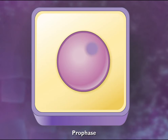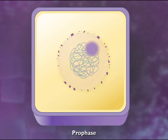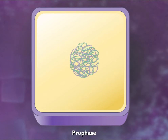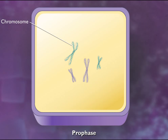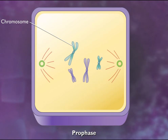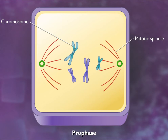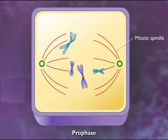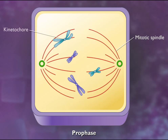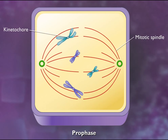Early in mitosis, during prophase, the nuclear membrane and nucleolus begin to break down. As prophase continues, the DNA condenses to form chromosomes while the mitotic spindle, made of proteins called microtubules, begins to form and attaches to the kinetochores on each chromosome.